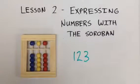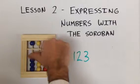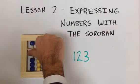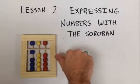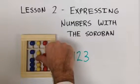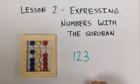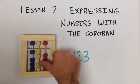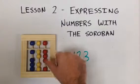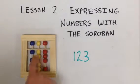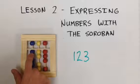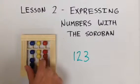How about the number 123? With our thumb, we move up one blue bead from the lower beads, two of the yellow lower beads, and three of the red lower beads. This expresses the number 123.